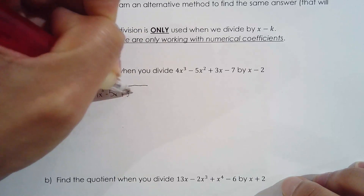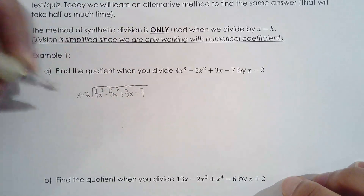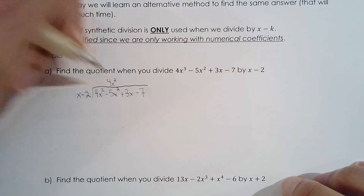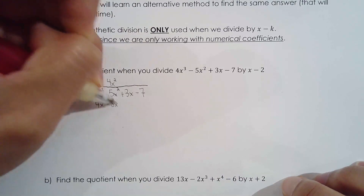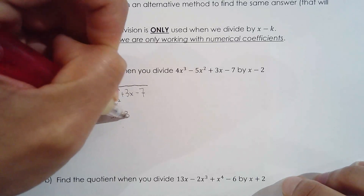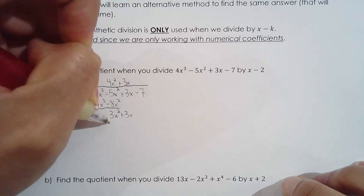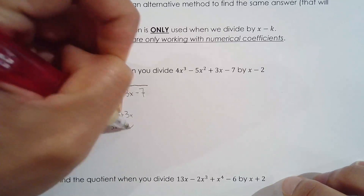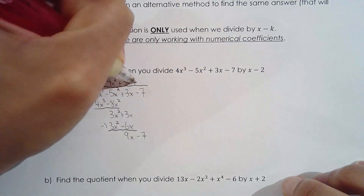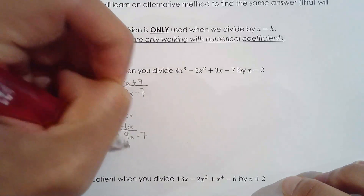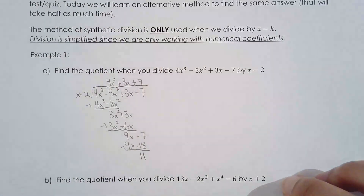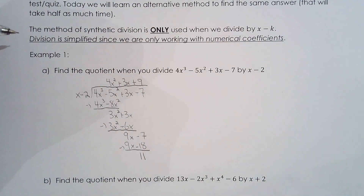Take your time doing long division. You get 4x² to produce 4x³ minus 8x², and be careful — negative minus negative gives positive — plus 3x. After subtracting through you get a remainder of 11, so the quotient from long division is 4x² plus 3x plus 9.